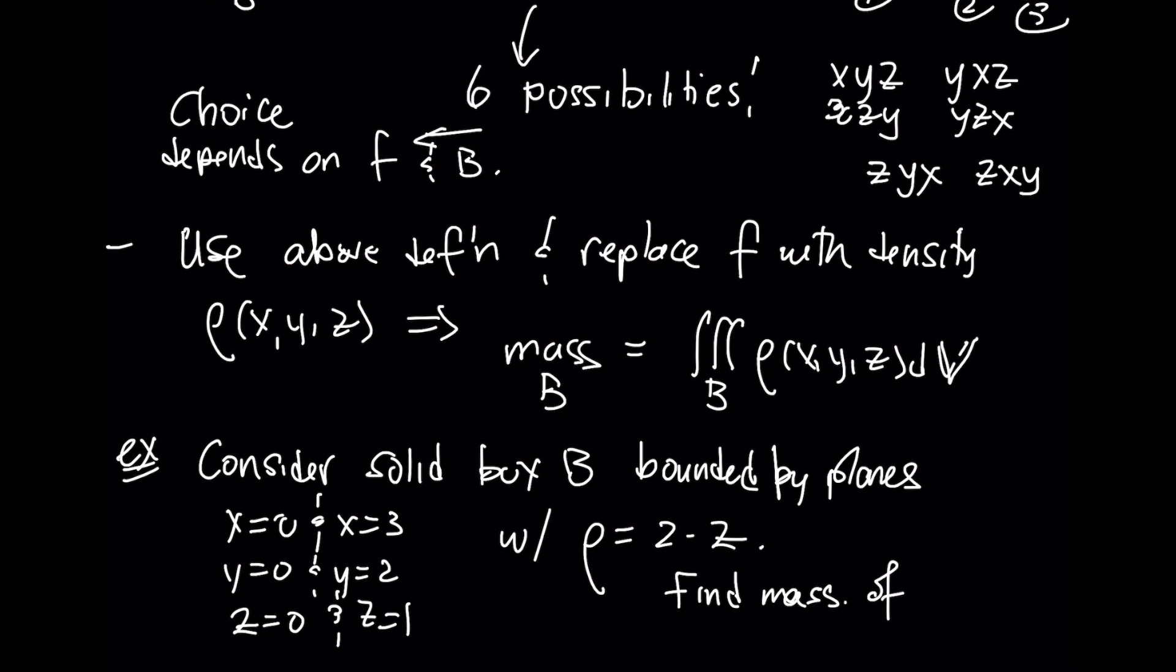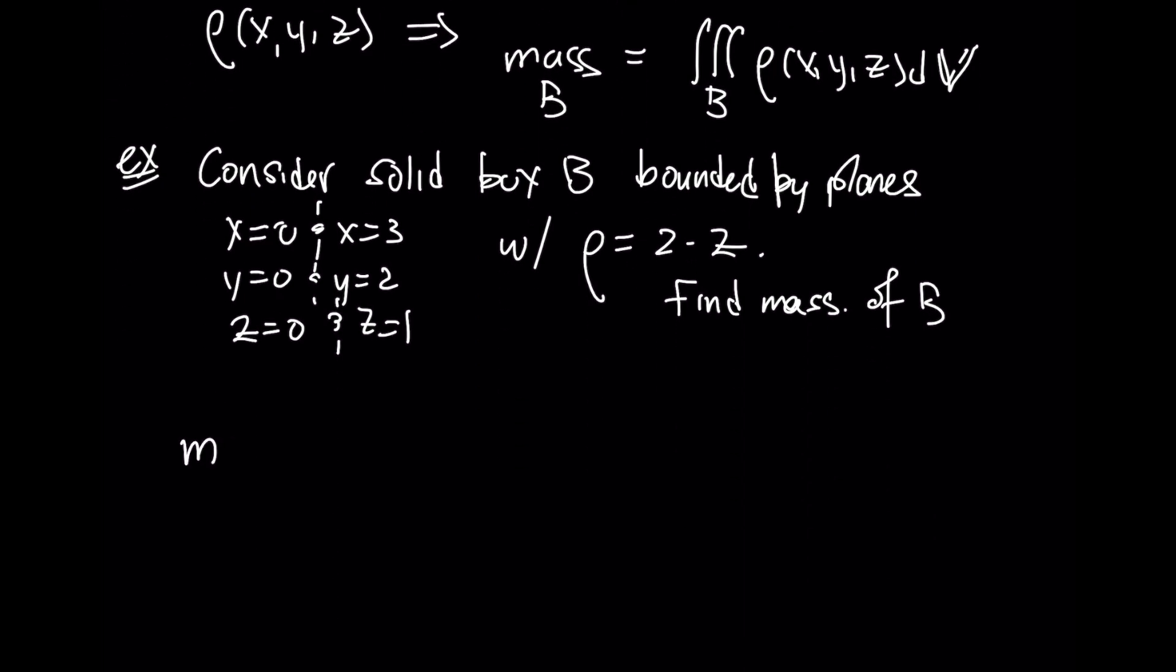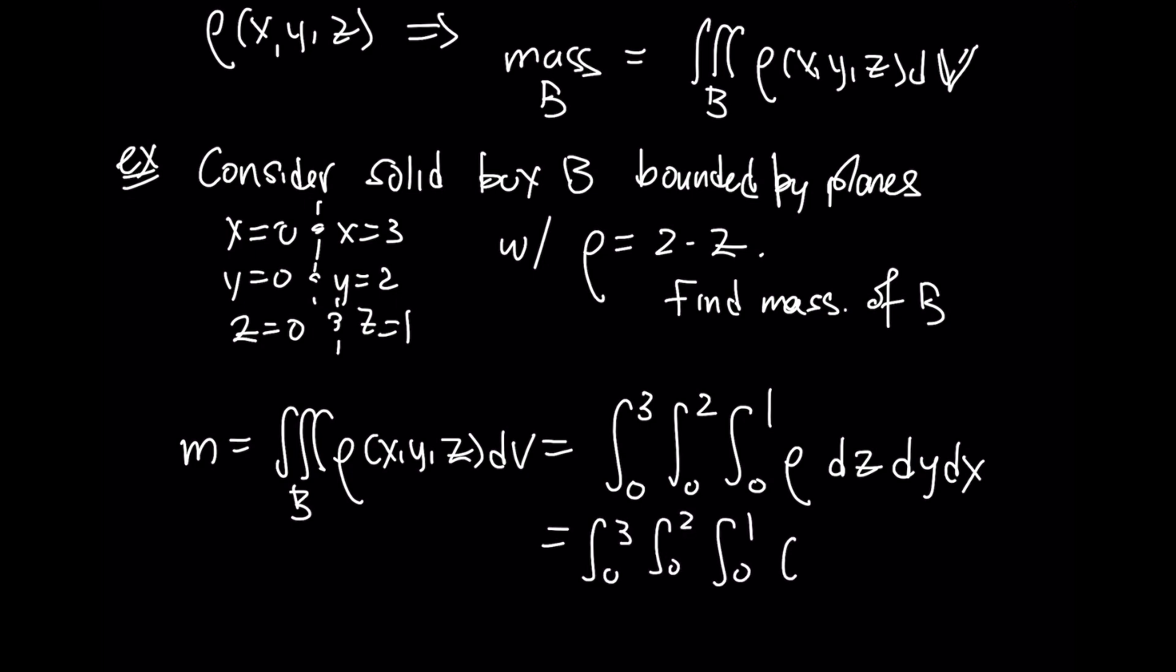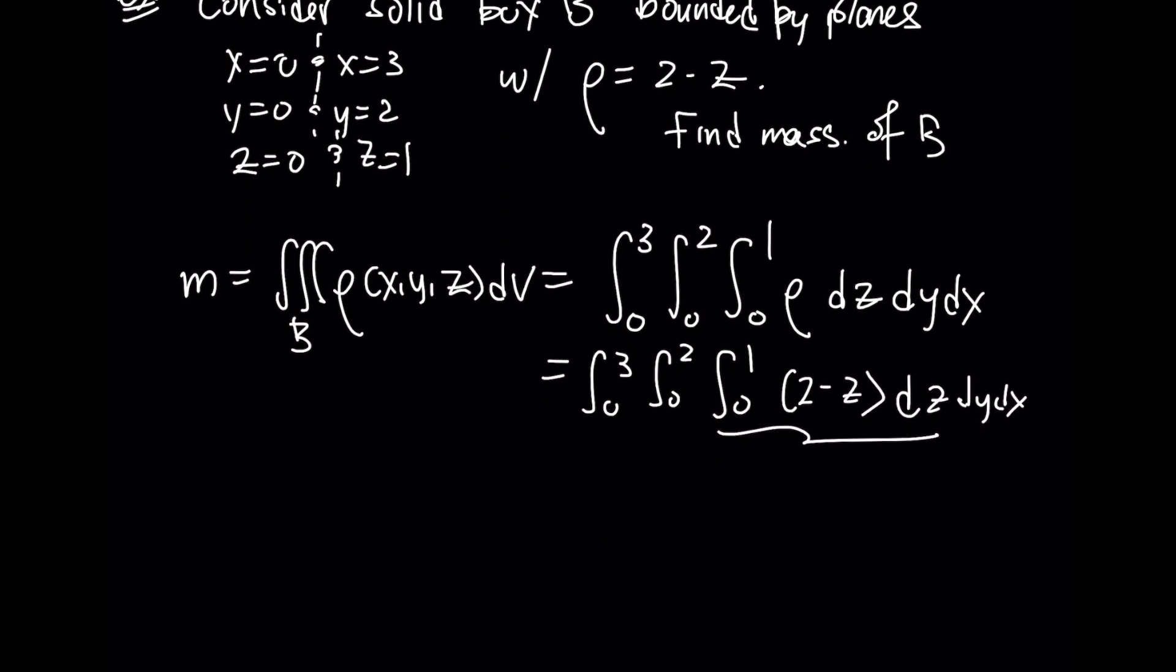This is a relatively straightforward example here. The mass of the box is simply going to be this triple integral. And we can choose to integrate with respect to any variable first. So let's try going with respect to z first and then working our way out y to x. So we will have rho dz dy dx. So our z integral will be first. 2 minus z dz dy dx. This anti-derivative will produce a 2z minus a z squared over 2 evaluated from 0 to 1.